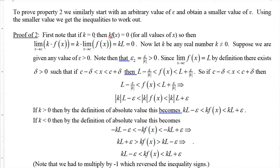For Property 2, if k is zero then k times f(x) is zero for all x, so the limit of k times f(x) is the limit of the zero function, which is zero. And k times the limit is zero times L, which is also zero. So it works when k equals zero. For the rest of the proof we assume k is not zero.